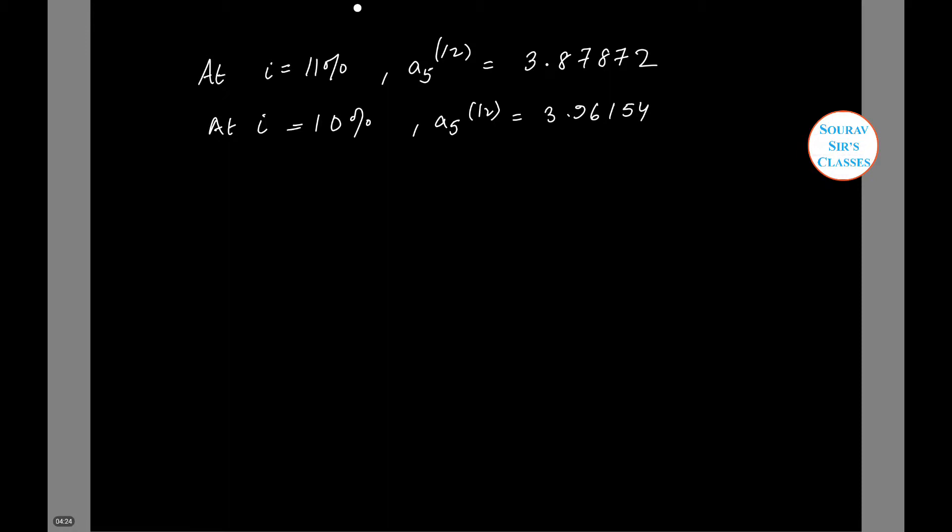Now we will use the interpolation method. Interpolating APR, i minus 10% divided by 3.89499 minus 3.96154 equals 11% minus 10% divided by 3.87872 minus 3.96154.